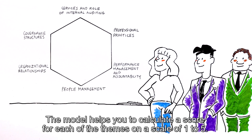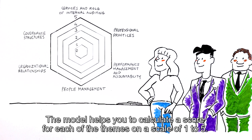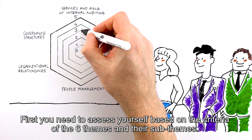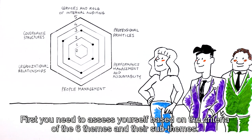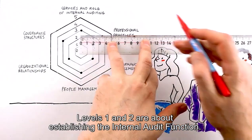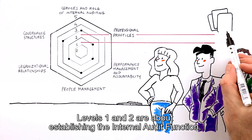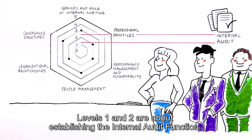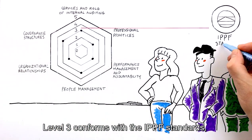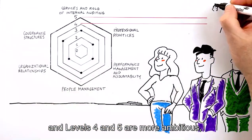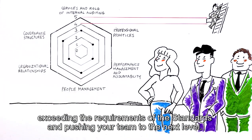The model helps you to calculate a score for each of the themes on a scale of 1 to 5. You need to assess yourself based on the criteria of the six themes and their sub-themes. Levels 1 and 2 are about establishing the internal audit function. Level 3 conforms with the IPPF standards. Levels 4 and 5 are more ambitious, exceeding the requirements of the standards and pushing your team to the next level.